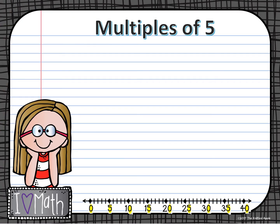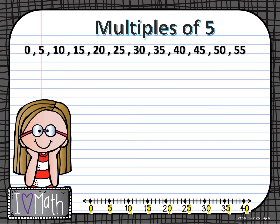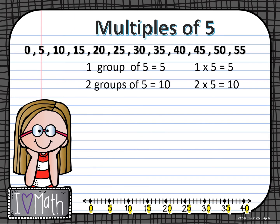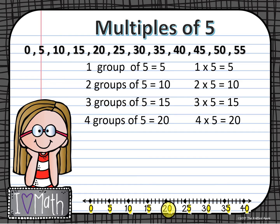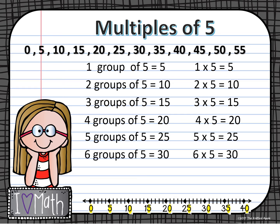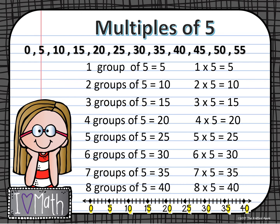So now let's take a look at our multiples of 5. Here are our multiples of 5, and of course they can continue on and on. If we had 0 groups of 5 that would be 0, but if we have 1 group of 5 we skip up one more leap, and that would be 5 on the number line. 2 groups of 5 would be 10, 3 groups of 5 would be 15, 4 groups of 5 would be 20. If we add another group of 5, that would give us 25, 6 groups of 5 would be 30, 7 groups of 5 would be 35, and 8 groups of 5 would be 40. And of course we could continue on — that would be considered a multiple of 5.